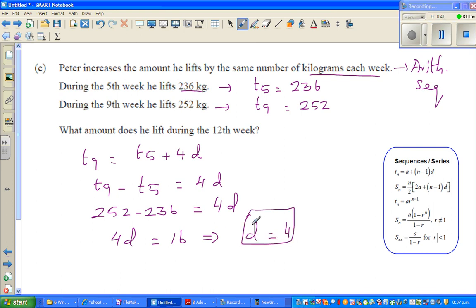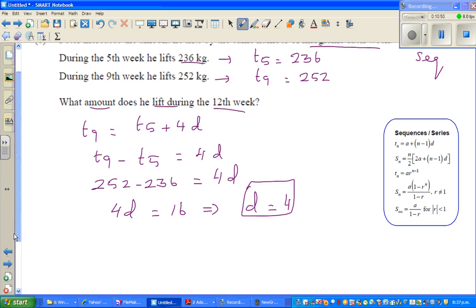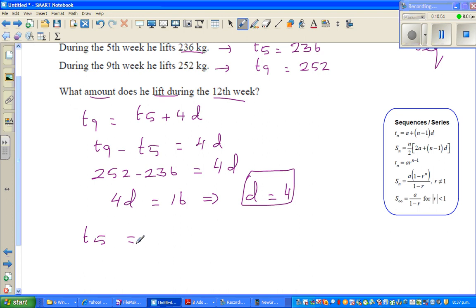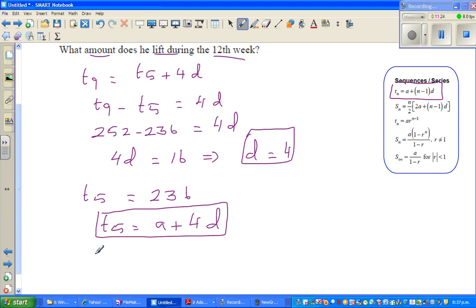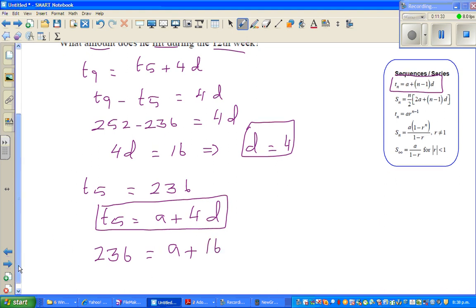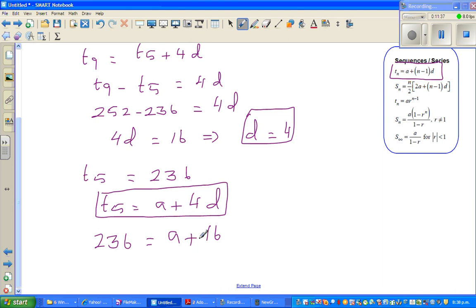Now the question is, what amount did he lift in the 12th week? We know d; now we need to find a. Let me write t5. T5 is 236. Can I write t5? T5 is a plus—if you put 5 in this formula—5 minus 1 is 4d. So t5 is a plus 4d. We know t5 is 236 equals a plus 4d. I already know 4d is 16. So if I take away, or think logically, 16 plus what gives you 236? This implies a is 220. So the first term is 220.